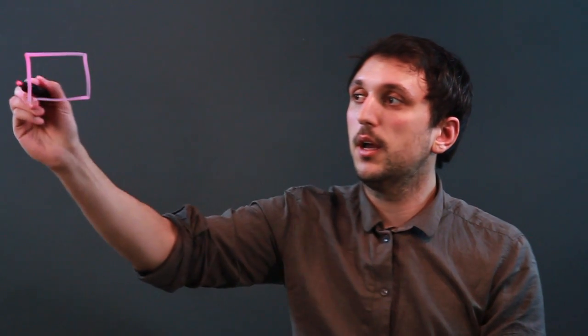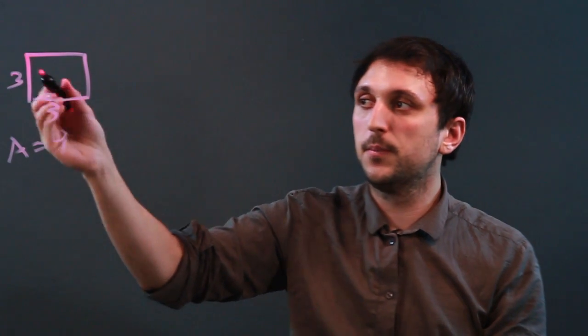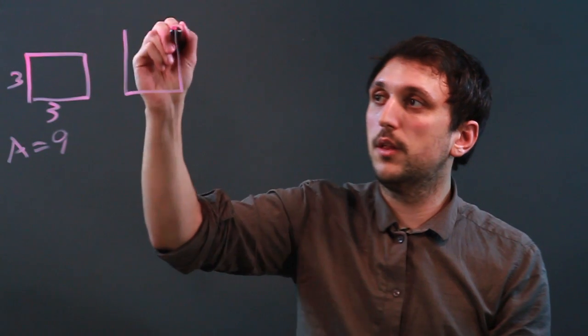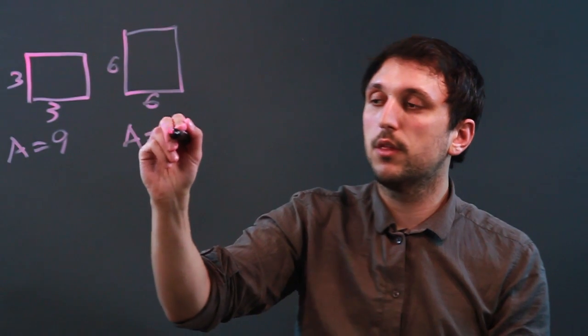Now, a scale factor has to be between two similar objects. Let's say we take a square that's 3 by 3, so the area is 9, and a square that is 6 by 6, so the area is 36.